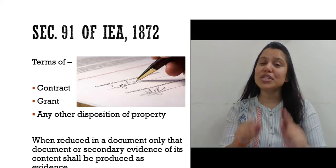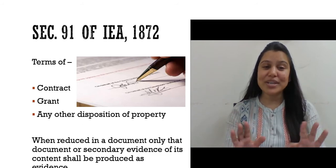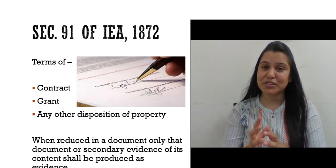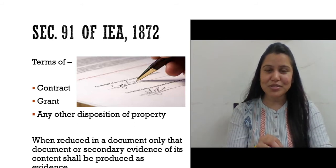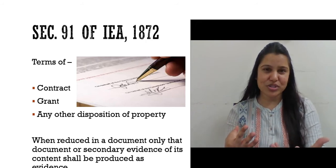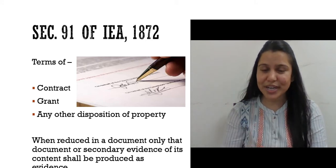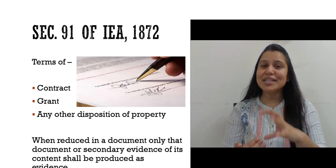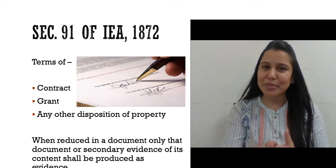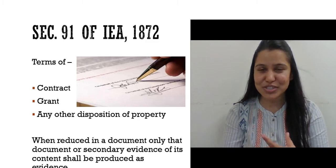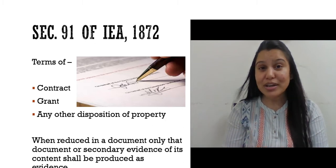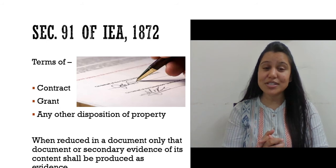and when it is reduced into writing, then no secondary evidence — only that document, or the secondary evidence of its contents, shall be produced as evidence. When these documents related to a contract, grant, or disposition of property are reduced into writing, the contents of the contract can only be proved through primary evidence or secondary evidence, as per section 65. No other medium.